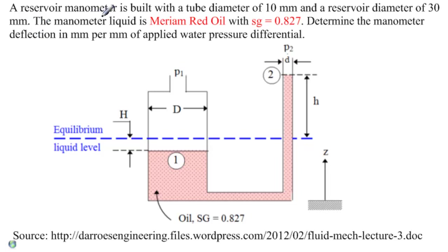The problem reads: A reservoir manometer is built with a tube diameter of 10 millimeters and a reservoir diameter of 30 millimeters. The manometer liquid is Meriam Red Oil with specific gravity equal to 0.827. Determine the manometer deflection in millimeters per millimeters of applied water pressure differential.